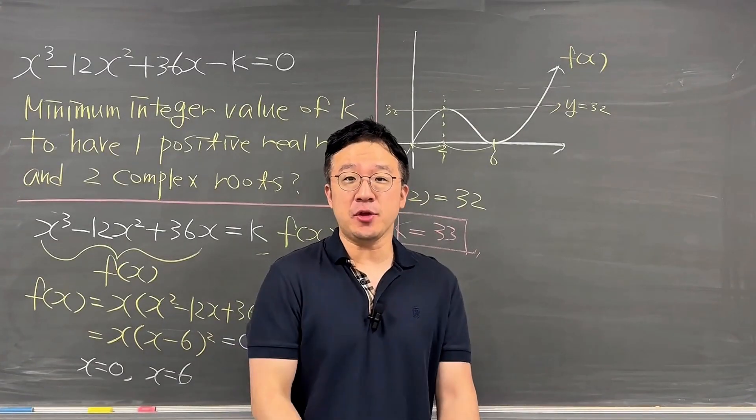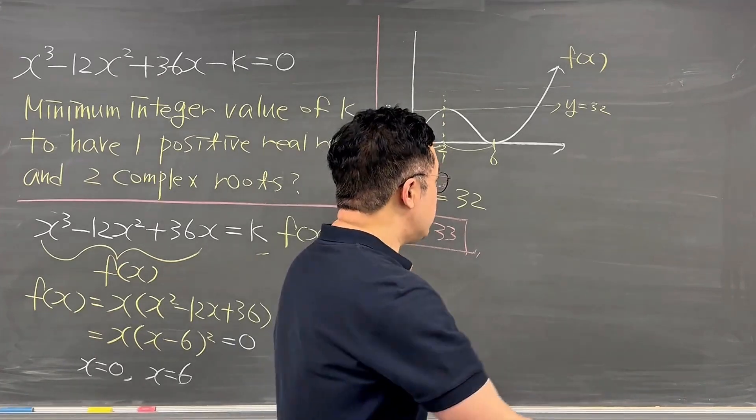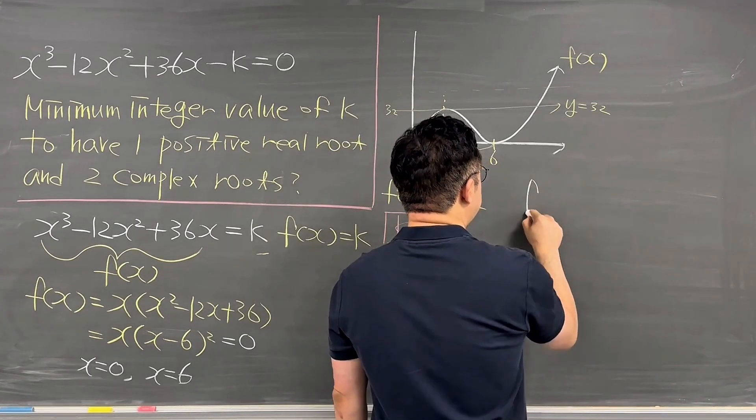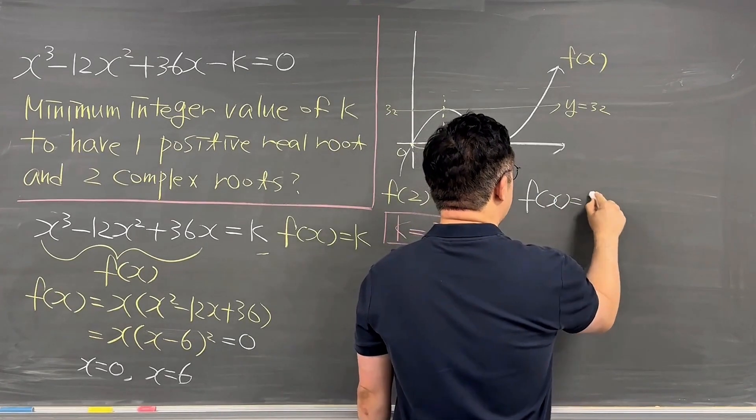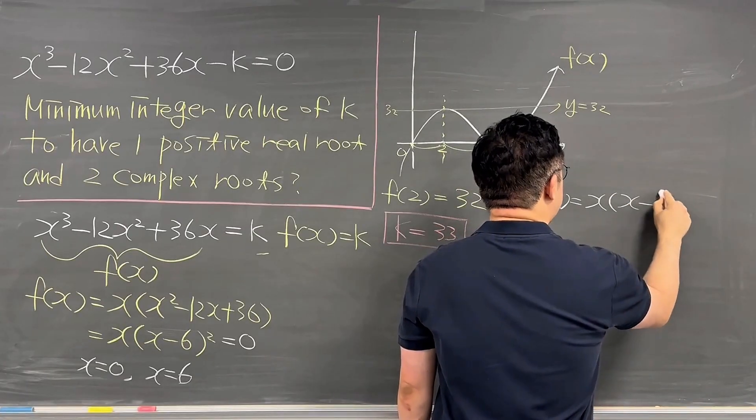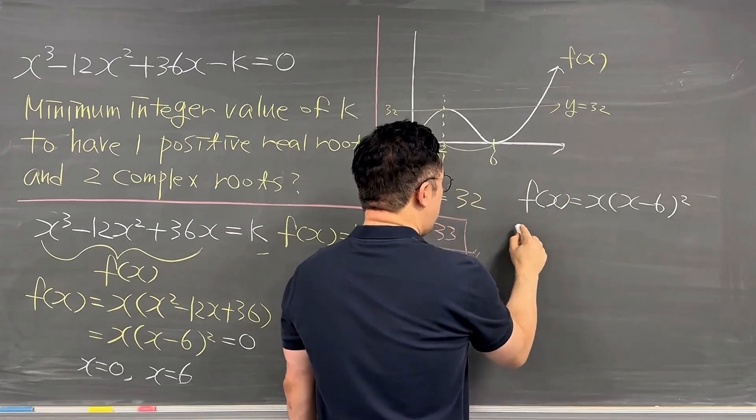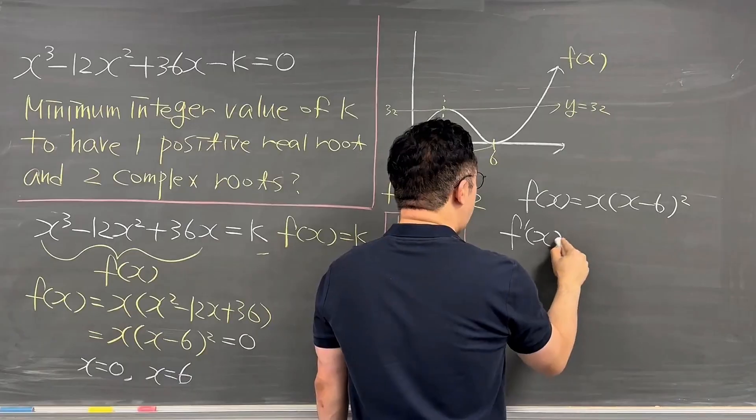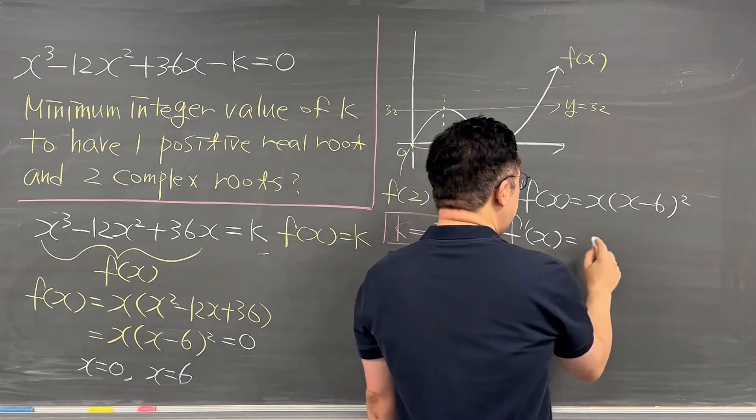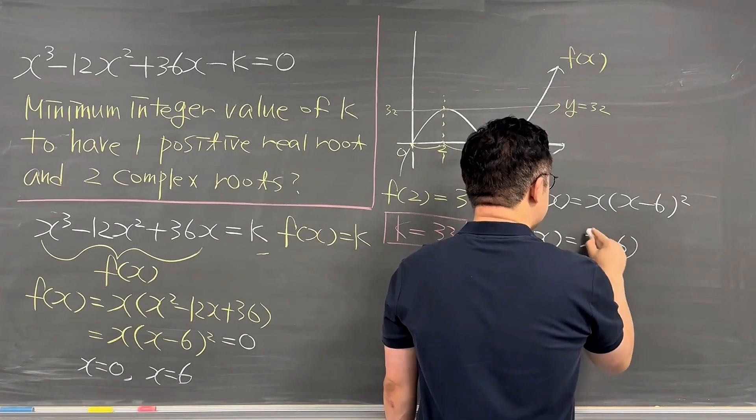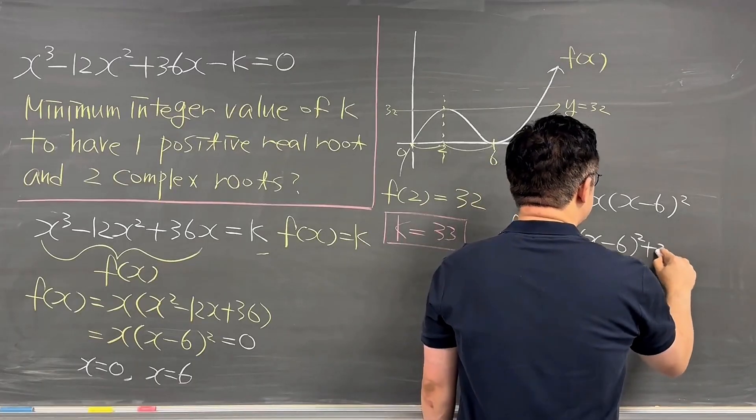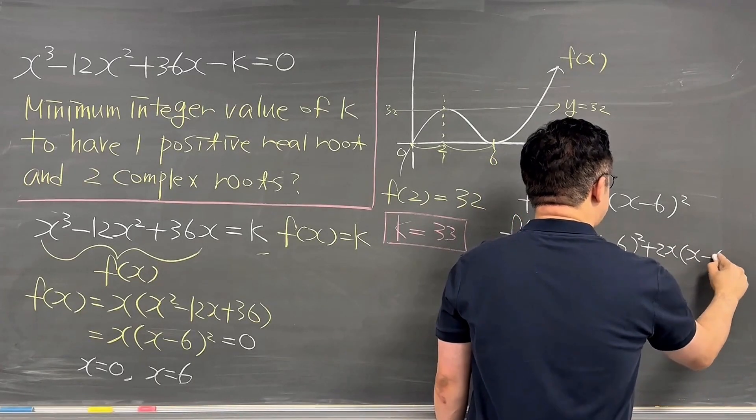Okay, then case number two. If you do not know about this property, then usually what you do is you get your derivative of this f(x). f(x) is now x(x-6)². Getting your derivative of this f(x), then f'(x) is now the product rule, right?